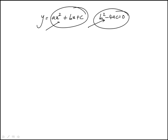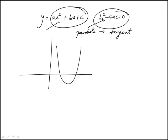And that means that the parabola will be tangent to the x-axis, because generally if we have something like this, we have two unique solutions.